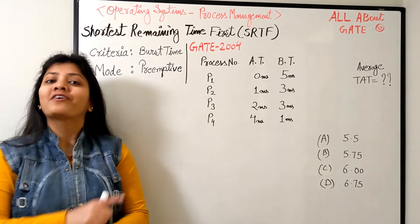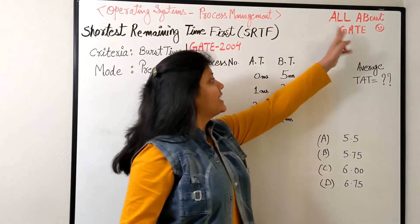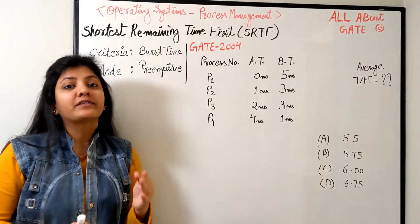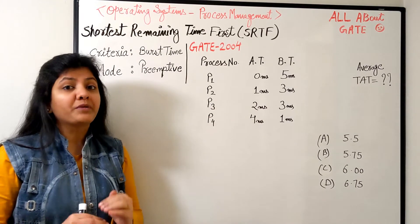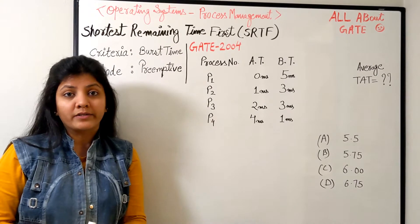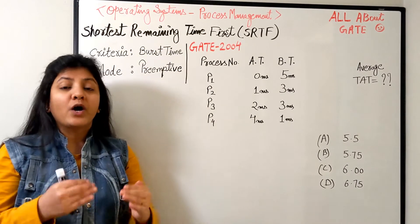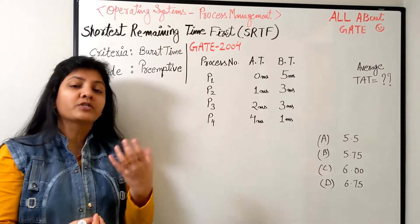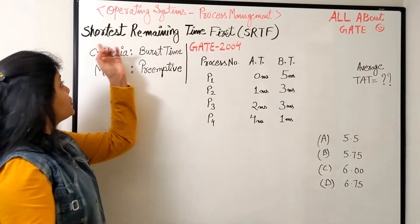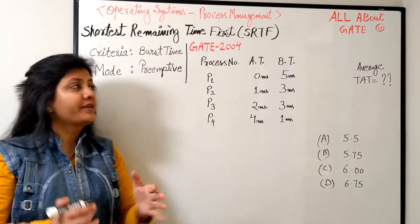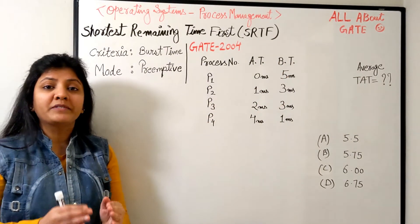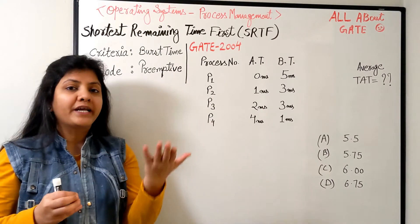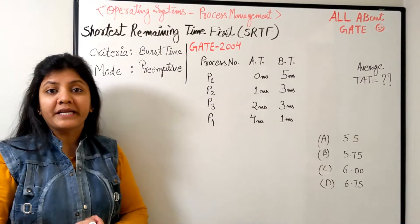Hello everyone, welcome to this YouTube channel where we talk all about the GATE exam and we are studying the operating system, the process management unit. In that, we are understanding the CPU scheduling algorithms one by one. In the previous video, we understood the shortest job first algorithm in the non-preemptive mode. Now is the time to understand the shortest job first algorithm with preemption. By including preemption to the shortest job first algorithm, it becomes shortest remaining time first — its popular name: SRTF. So most of the time in the exam, the preemptive shortest job first algorithm would be addressed by the name SRTF, shortest remaining time first.